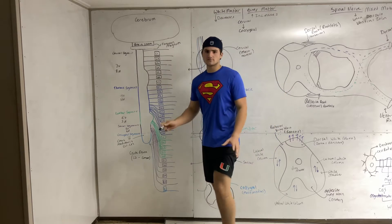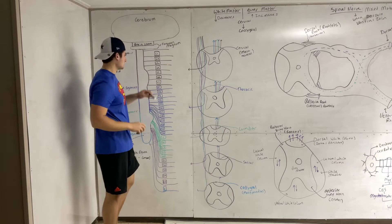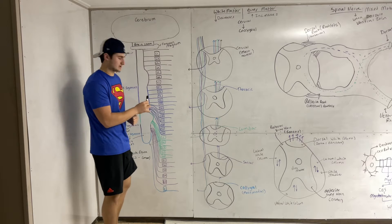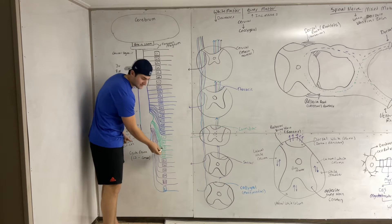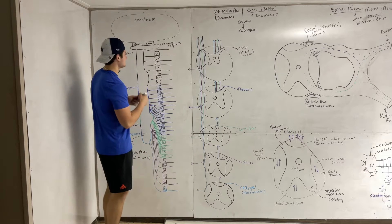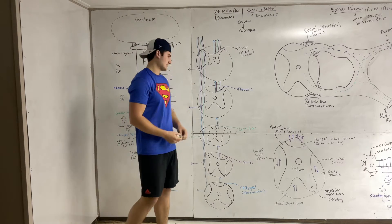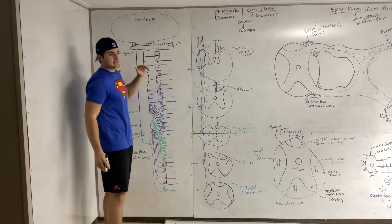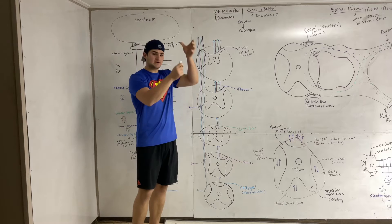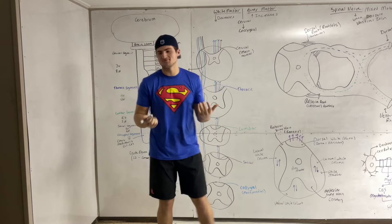Quick anatomy overview: we have seven cervical vertebrae, twelve thoracic vertebrae, five lumbar, five sacral, and one coccygeal. These lines running through all of them represent nerves — it would make sense that every vertebra has its own nerve and that the spinal cord runs parallel to the vertebrae. However, that's not how it works.